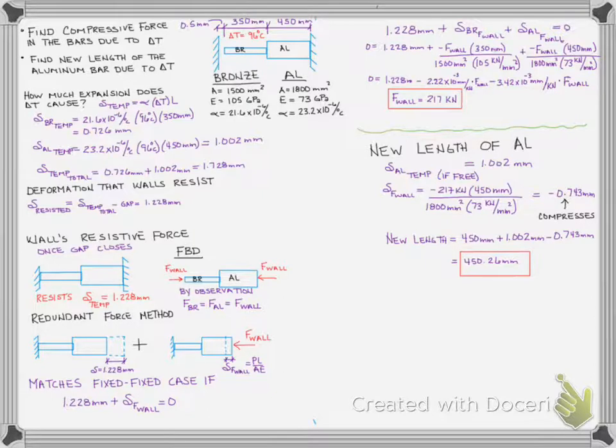So we hope this helps you to see how to look at the different materials individually. Also, look at how a point moves. This basically tells us that that junction between the bronze and the aluminum shifts to the left by 0.26 millimeters. So I hope you enjoyed this. Thermal expansion is a lot of fun, and it's a great use of the redundant force method. Thanks for watching.